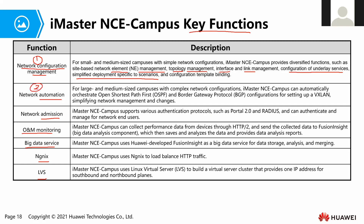The second feature is network automation. Basically, from NCE Campus we can automatically configure the underlay network — the OSPF and the BGP for the WAN access. So from NCE Campus you don't need to do any physical configuration or use a console. You just need to click around the web page and it will automatically send the configuration for OSPF and BGP when you deploy the WAN access.